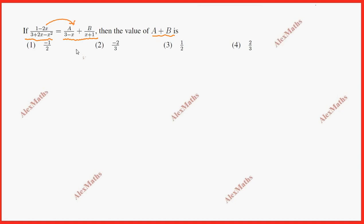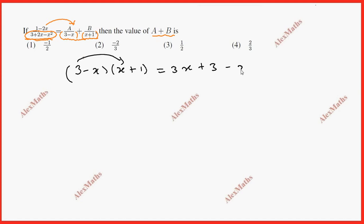Partial fraction — we split this by factorizing the denominator. So in the factorization, this is a product. Check: (3 minus x) into (x plus 1) gives 3x plus 3 minus x squared minus x, so total is 3 plus 2x minus x squared. So these factors are correct.